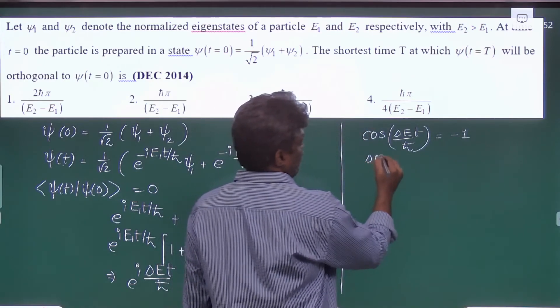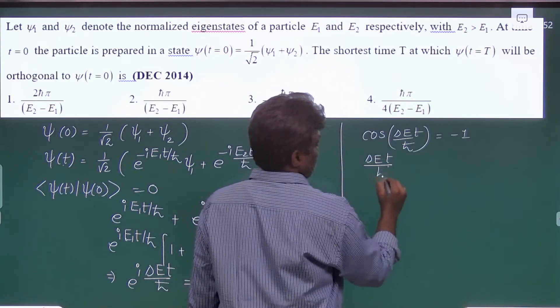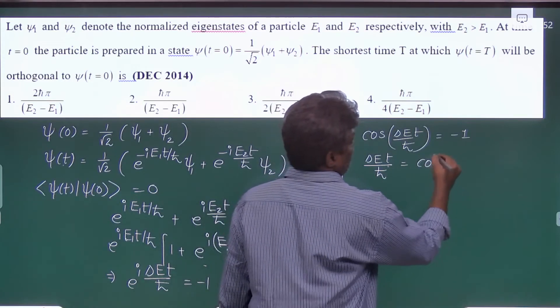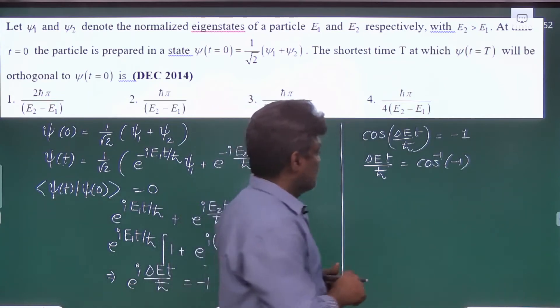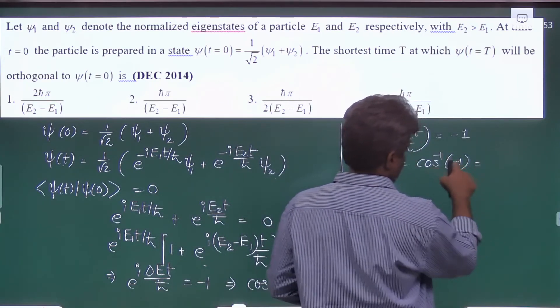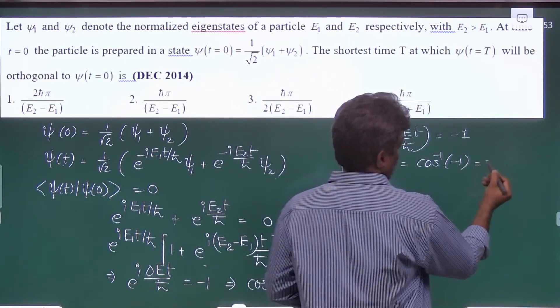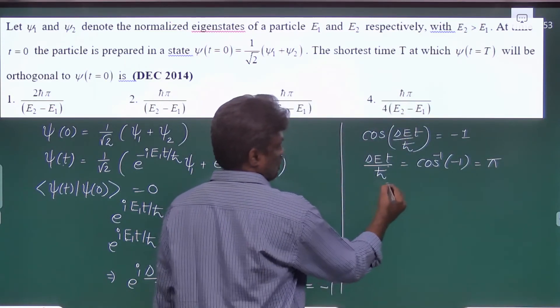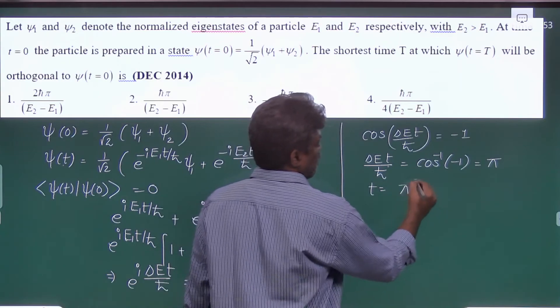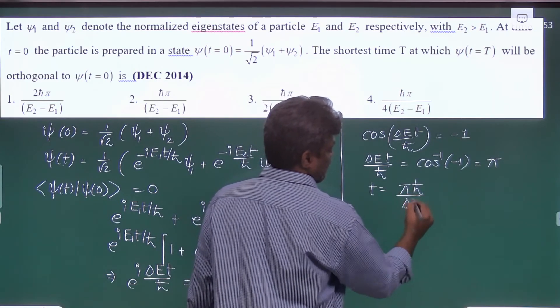So from this we can write delta E t by h cross is cos inverse of minus 1. He's asking the shortest time, that's why this cos inverse minus 1 will become equal to pi. So t equal to pi h cross by delta E.